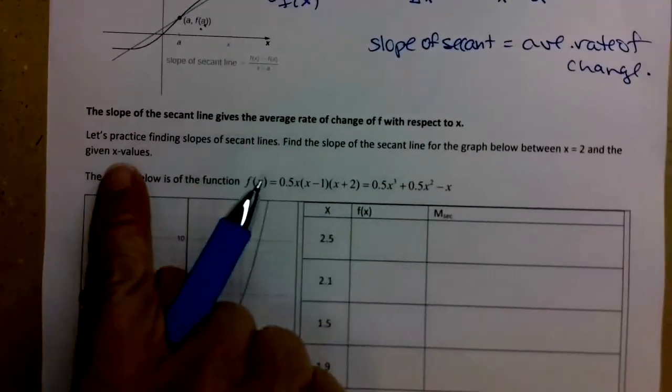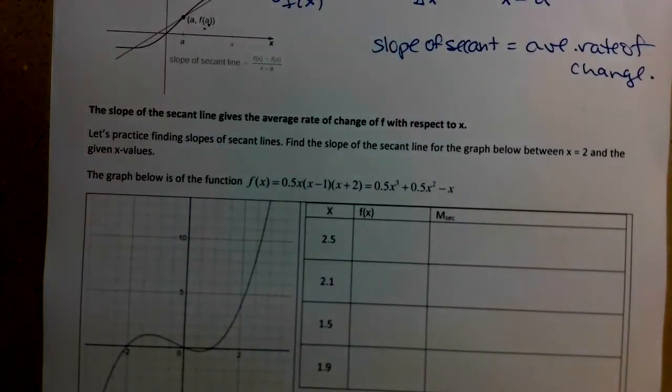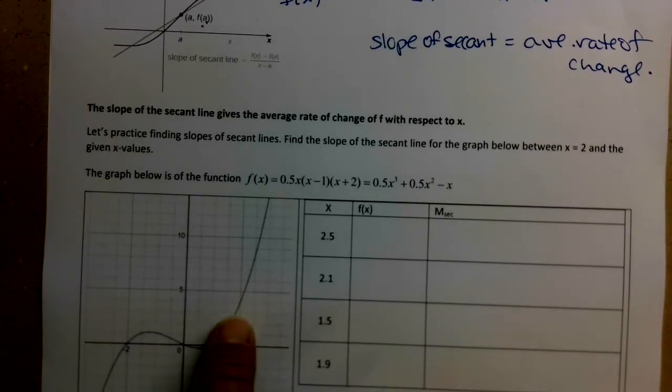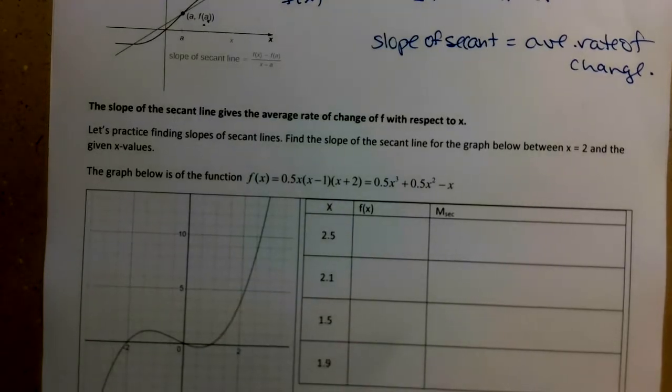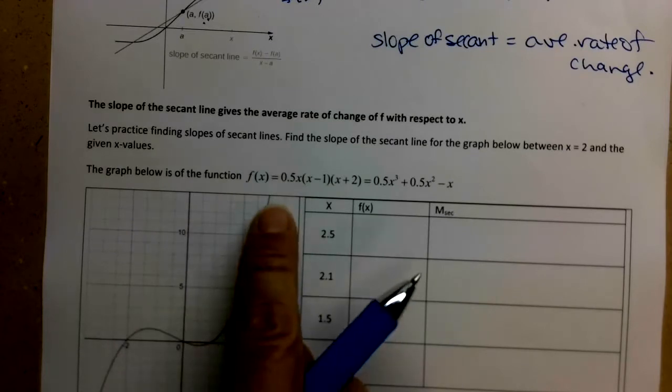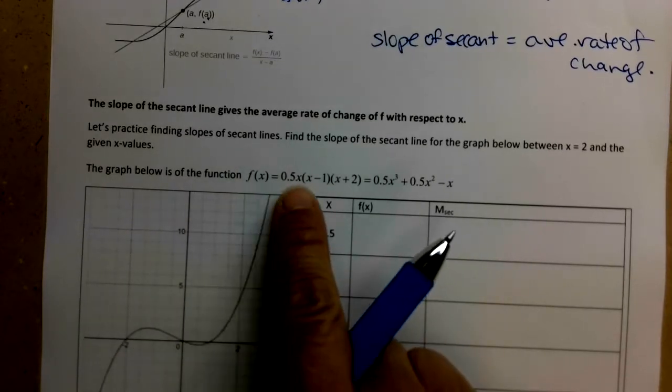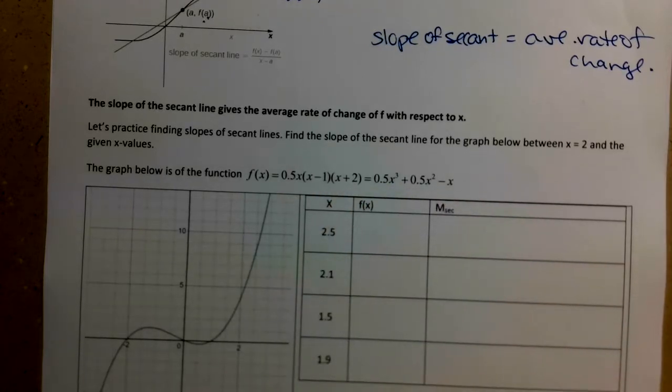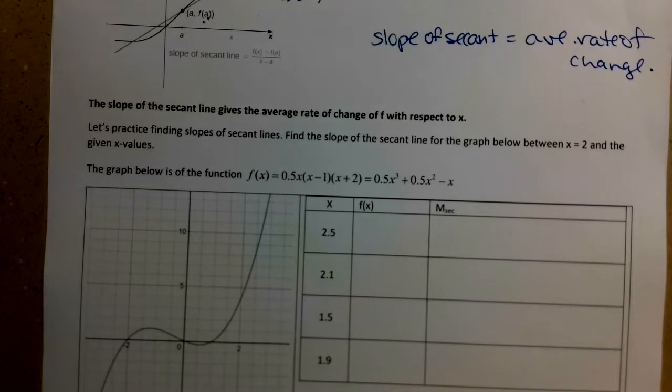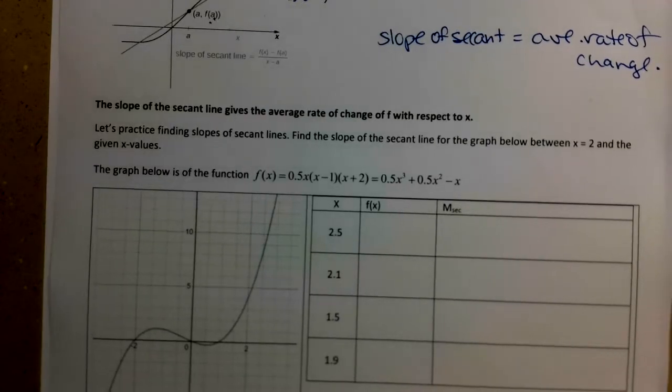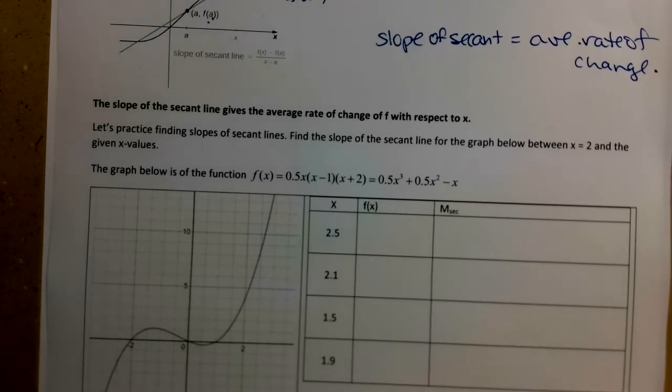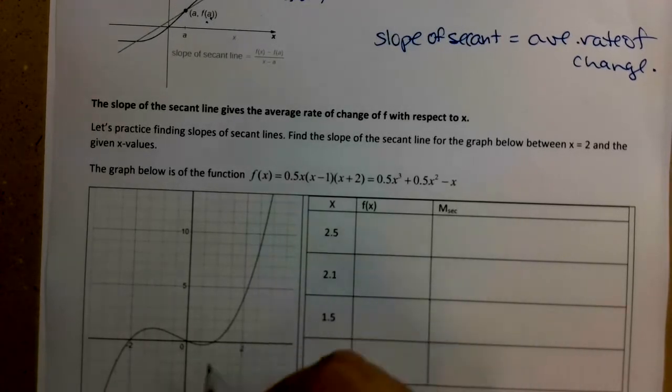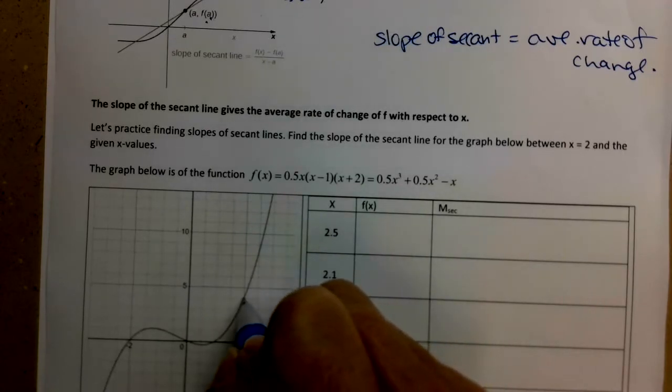So let's practice finding slopes of secant lines. We're going to find the slope of the secant line for the graph below, between x equals 2, so that's going to be our given value, our a, and some different x values. The function that's pictured here is 0.5x times (x minus 1) times (x plus 2), or if you multiply it all out, is 0.5x cubed plus 0.5x squared minus x.